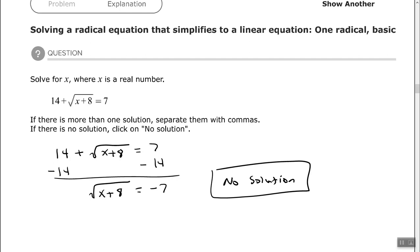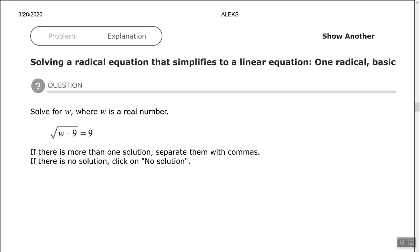All right, let's look at another one. All right, so on this one, we have the square root of w minus 9 equals positive 9. The radical is already isolated. It's equal to a positive number. So here we should have at least one solution. So let's work on solving this.